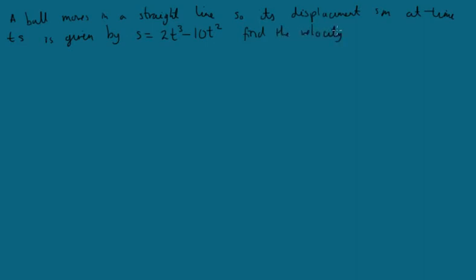Let's look at another example. A ball moves in a straight line, so its displacement s in meters at time t in seconds is given by s equals 2t cubed minus 10t squared. Find the velocity at t equals 2 seconds. We're going to differentiate s.